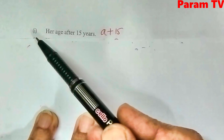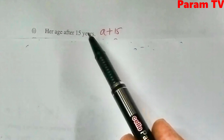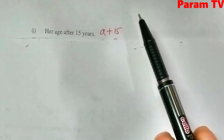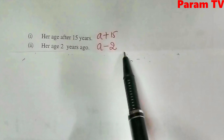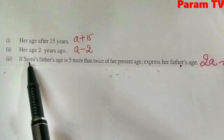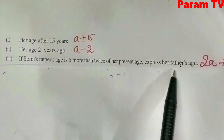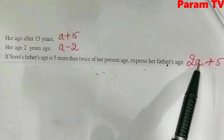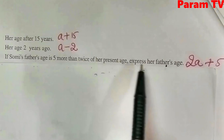Question number 9 involves Sumi's age, given as A years. Her age after 15 years: A plus 15. Her age 2 years ago: A minus 2. If Sumi's father's age is 5 more than twice her present age — first twice her age is 2A, then add 5 more — so father's age is 2A plus 5.